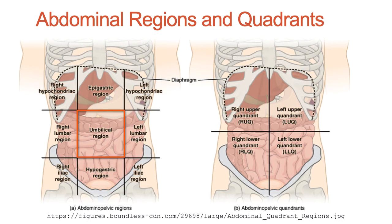The quadrant system is much simpler. It subdivides the cavity with one horizontal line and one vertical line intersecting at the patient's navel, creating four quadrants simply named left, right, upper, and lower — again in relation to the patient's left and right. Both systems are commonly used in the medical field, and you will be expected to know the regions and the organs or portions of organs within them.